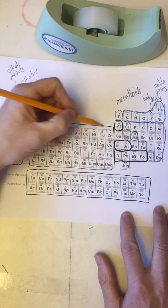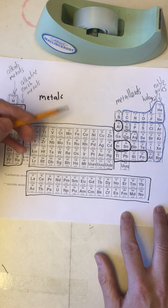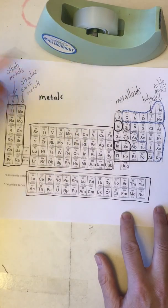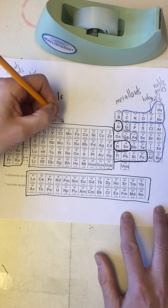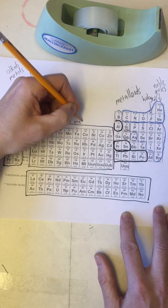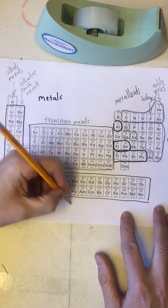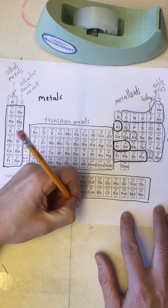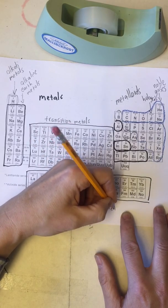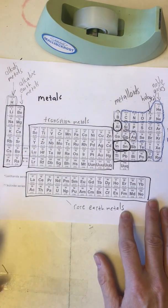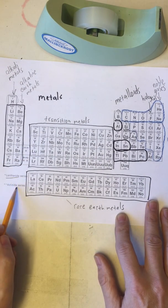The metals here in the center, scandium, titanium, vanadium, some of the metals you've probably heard of like iron or nickel or copper, these are called the transition metals. And then these metals down here that are broken out, these are called the rare earth metals, sometimes referred to as lanthanides and actinides.